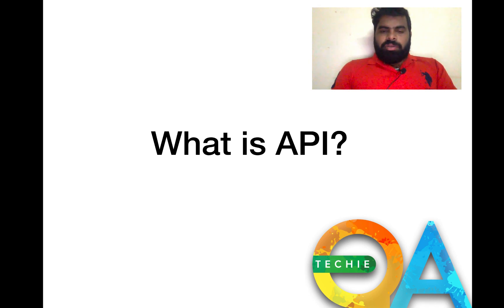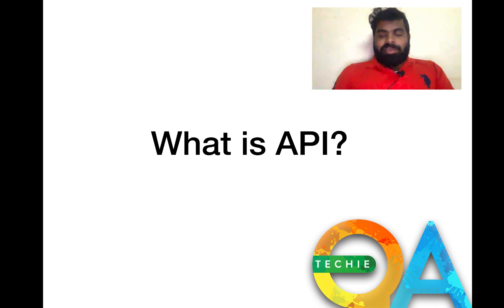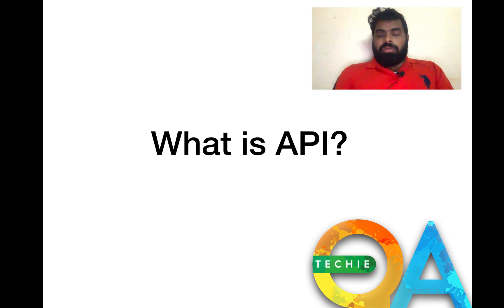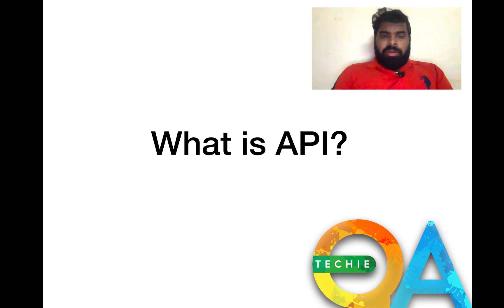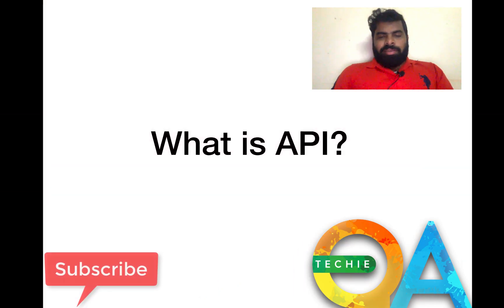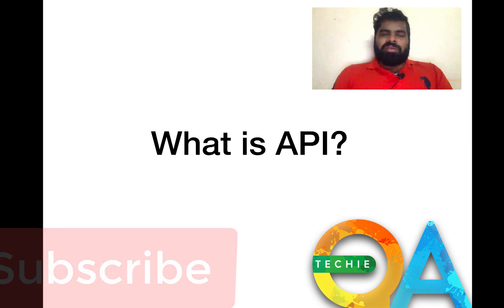If they ask 'do you know API testing?', you should explain what API is and how you will test it. If you know what API is, you can test properly, and you can relate it to other questions too. Don't just say the three words — Application Programming Interface. Tell the interviewer what you actually understood.